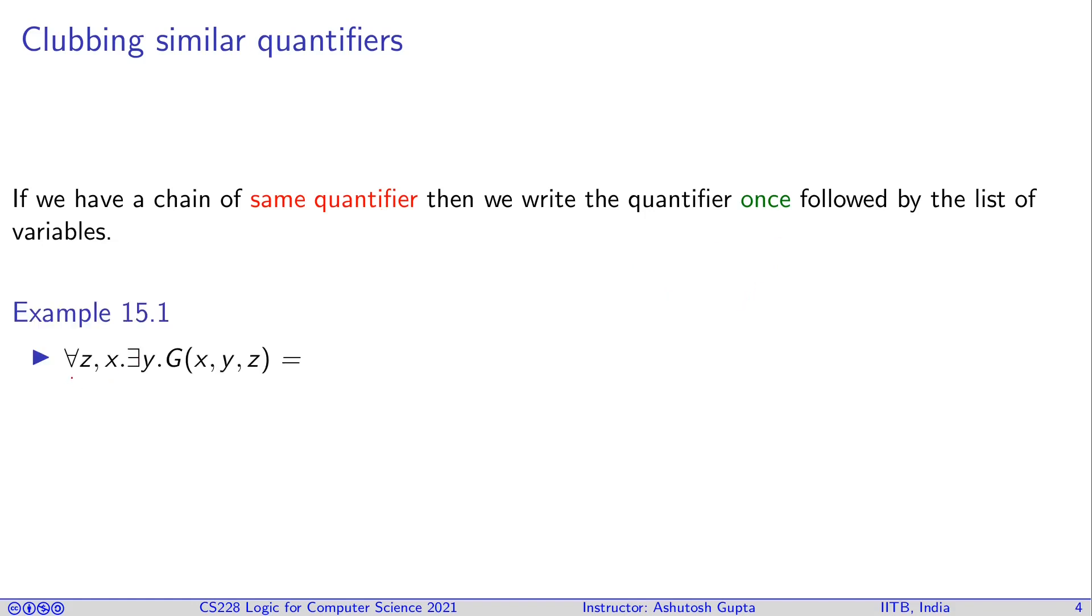For example, this formula for all zx, there exists y, means that you have one quantifier first over z, then quantifier over x, and there exists one. This can be easily proven from the semantics of first order logic that the order of same quantifier doesn't matter. It could have been written x here and z here, it means the same. Similarly, you can put together the exists quantifier also.